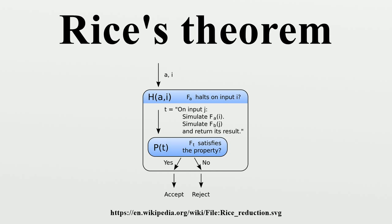In practice, this means that there is no machine that can always decide whether the language of a given Turing machine has a particular non-trivial property. Special cases include the undecidability of whether a Turing machine accepts a particular string, whether a Turing machine recognizes a particular recognizable language, and whether the language recognized by a Turing machine could be recognized by a non-trivial simpler machine.